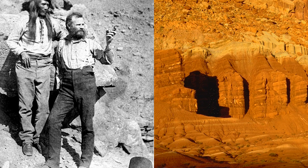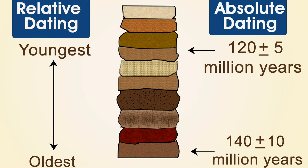Now we're going to get into the dating aspect. Whenever we start talking about dating of rocks, there are two ways we can do this. We can relative date — which is just putting events in a sequence of order: this event occurred first, this second, this third, and so on. Whenever we absolute date, that's when we actually assign a true age to the rock, such as 120 million years or 140 million years. We'll be talking about absolute dating in a different video.